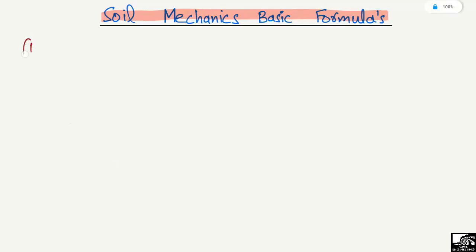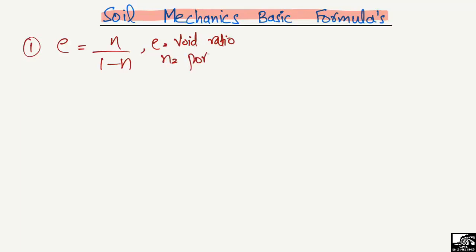Starting from the first formula, which is a very basic one: the relation between the void ratio and the porosity. The formula is e = n/(1-n), where e is the void ratio and n is the porosity of the soil. This formula is mostly used when you have to find the void ratio and porosity is given.